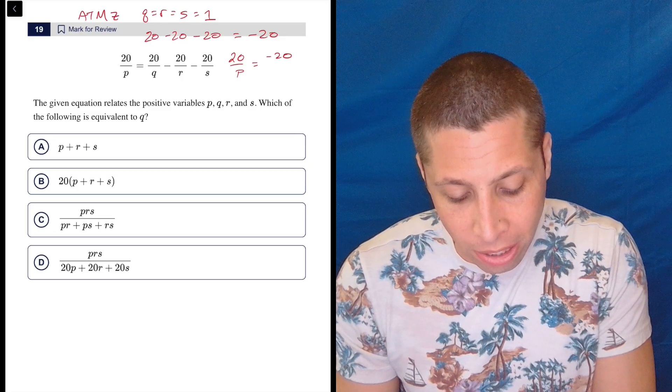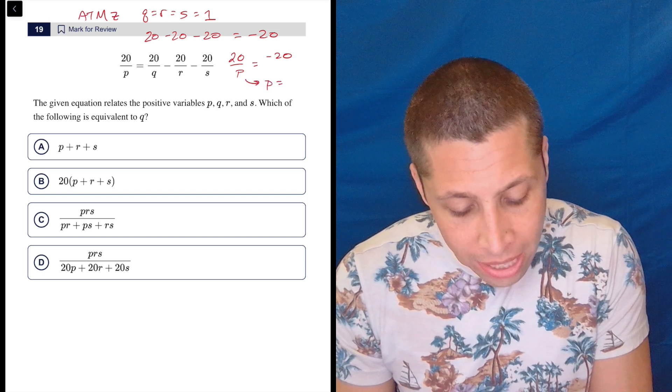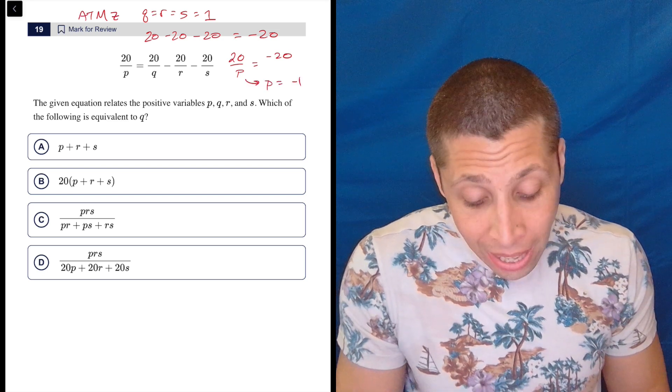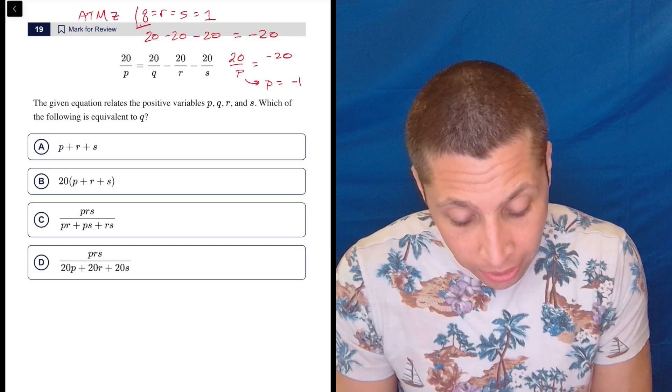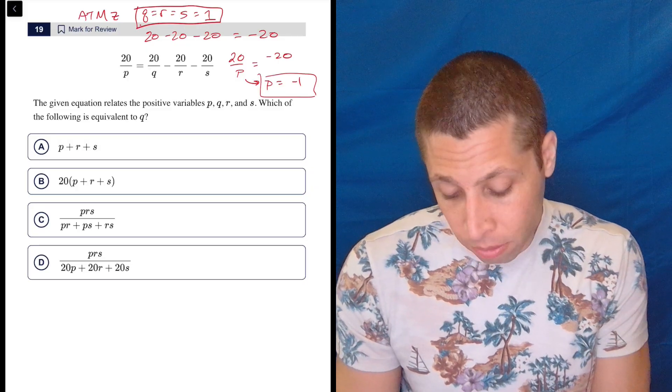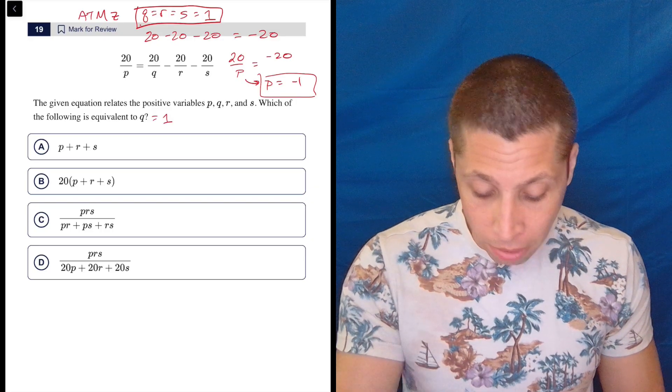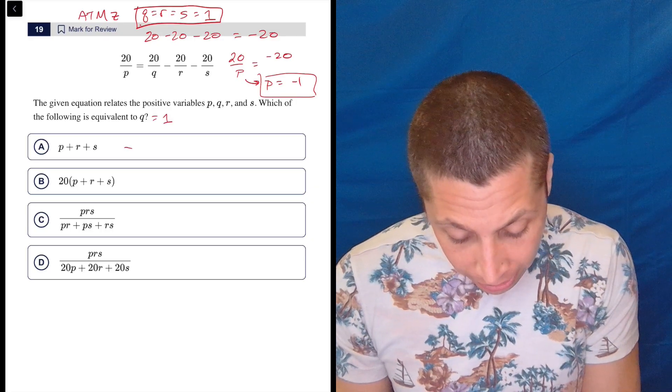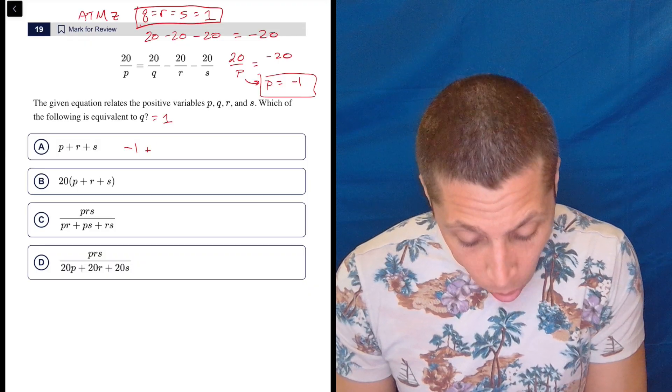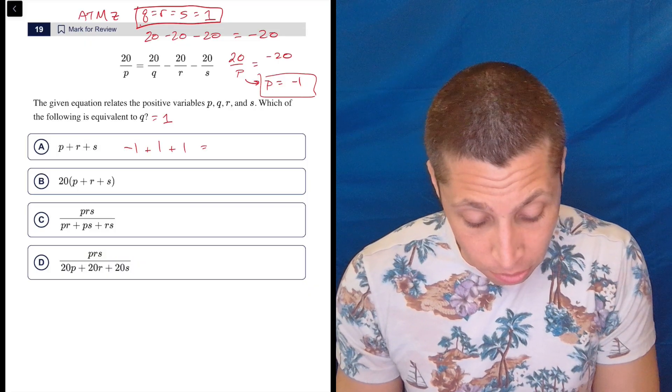Now with P, I have to figure out what it could be, but 20 minus 20 minus 20 is negative 20. So 20 over P is equal to negative 20. Well, I could cross-multiply and divide, but I can already see it. That only works if P equals negative 1. So I've got numbers now for all my things. I've got these three, and I've got this one. It's a little different.